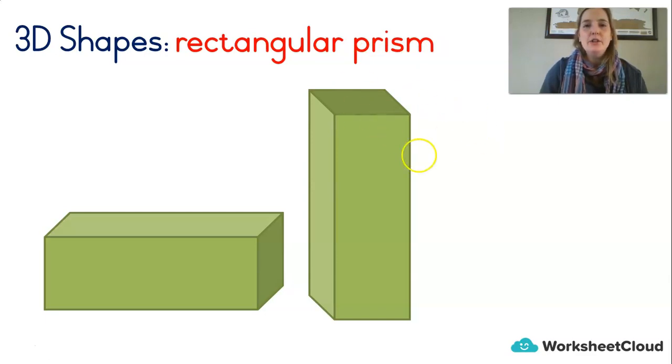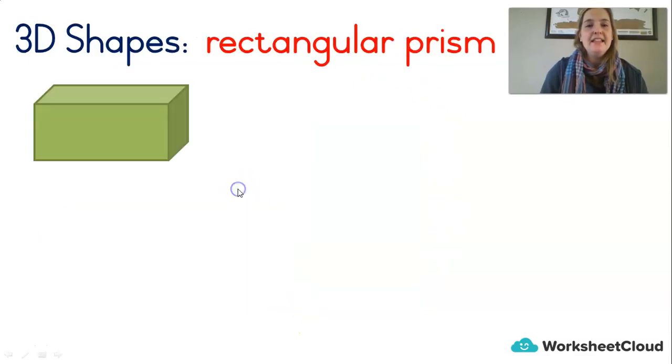You get lots of different kinds of prisms actually. This one is called a rectangular prism, because it's got rectangle sides.